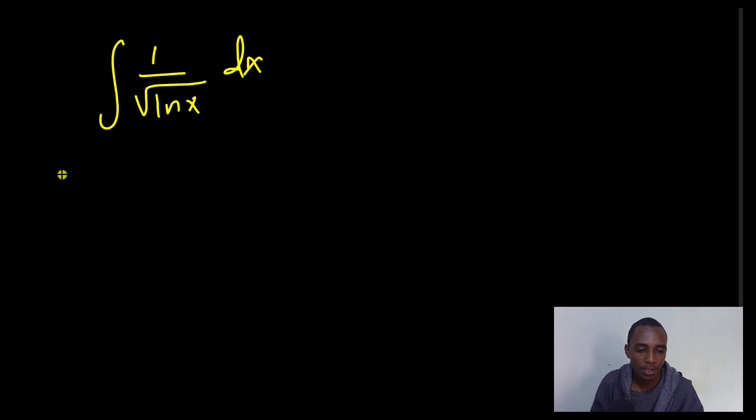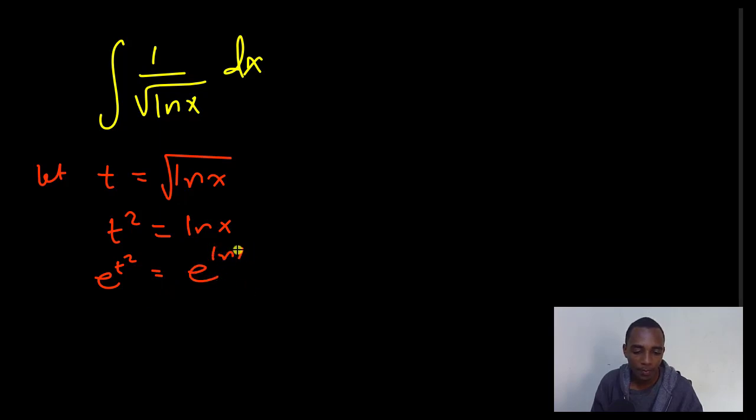If I let another variable like t to be equal to the square root of ln x here, then squaring both sides, I have t squared equals ln x. I can take exponents on both sides. So exponent of t squared equals exponent of ln x. This is exponent of t squared. This is going to be just x because that's the antilog of ln. The idea here is I want to substitute for dx and every x in this integral.